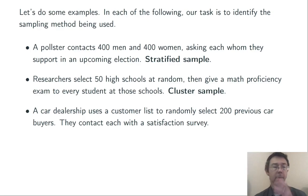Example three, a car dealership uses a customer list to randomly select 200 previous car buyers. They then contact each one with a satisfaction survey. This is a prototypical example of a simple random sample. Every group of 200 customers has the same chance of being selected.